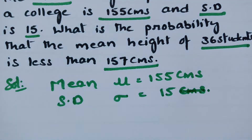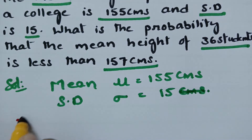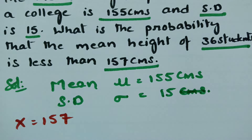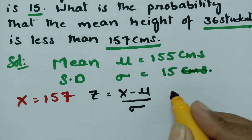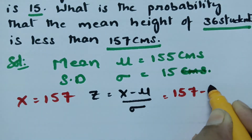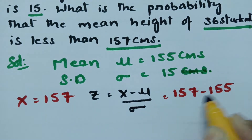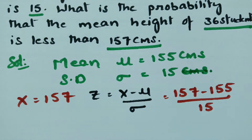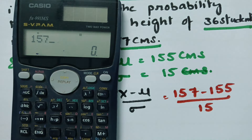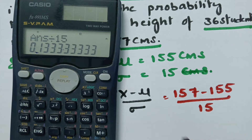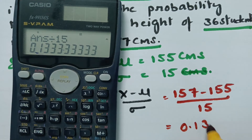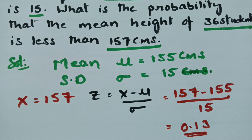We have to work with 157. When x is equal to 157, what will be the z value? z is equal to x minus mu divided by sigma. Substituting: z = (157 − 155) / 15 = 2 / 15. The value is 0.13. So our z value is 0.13.